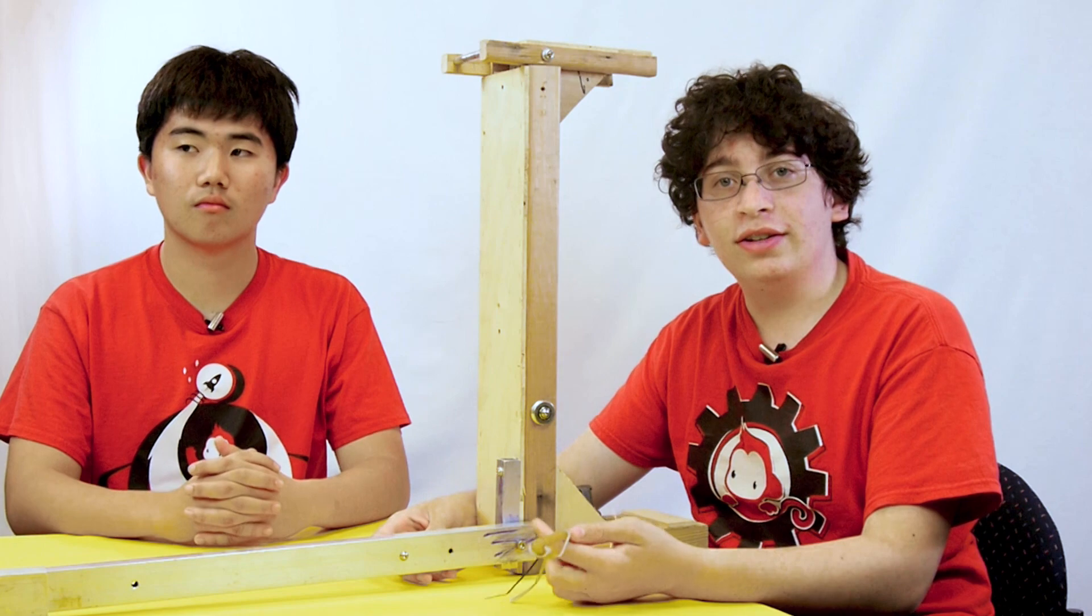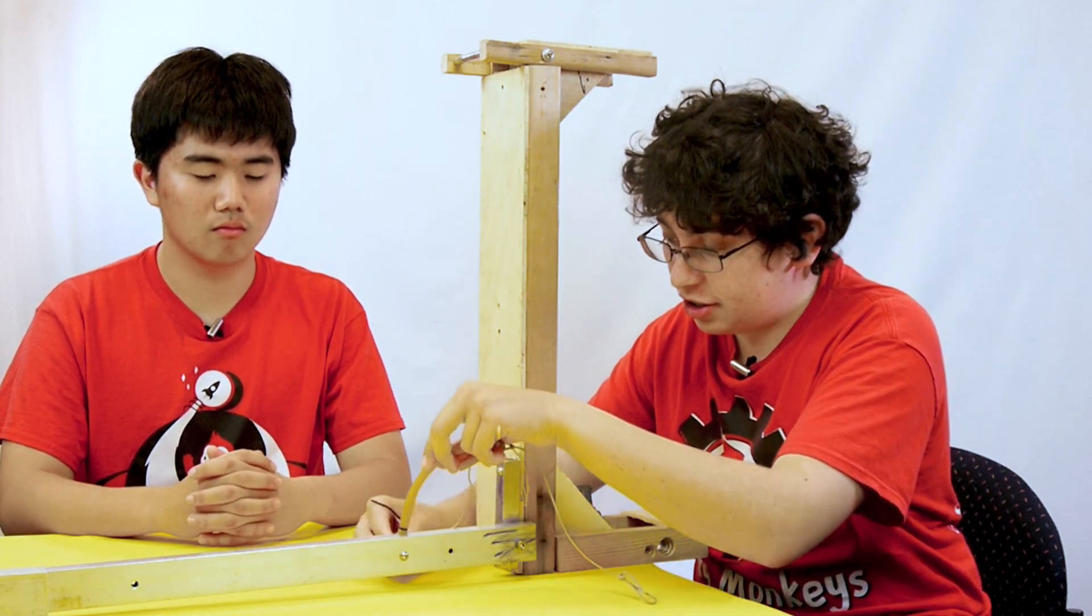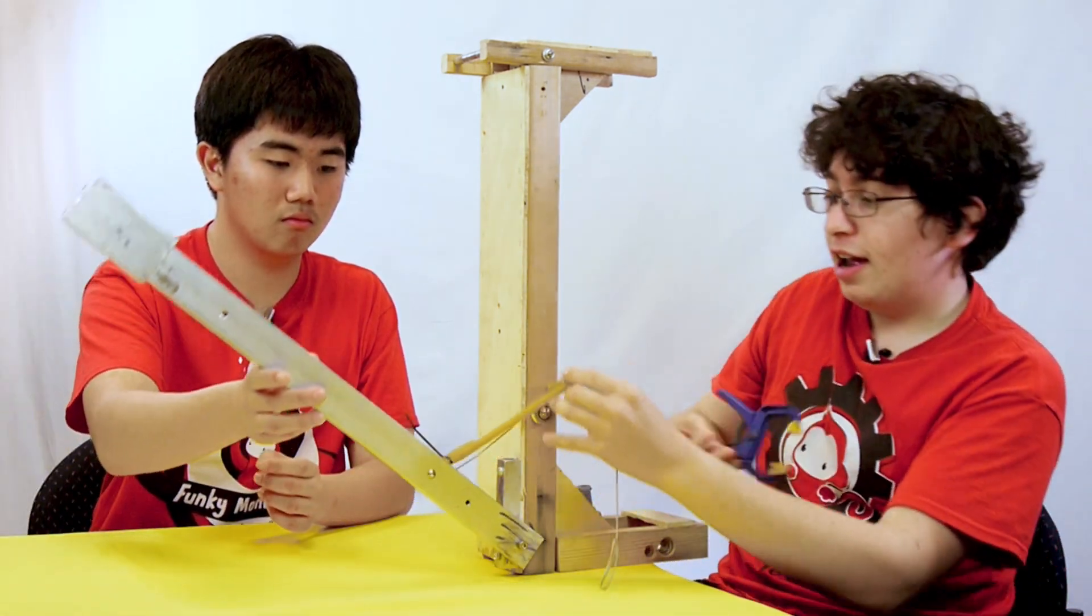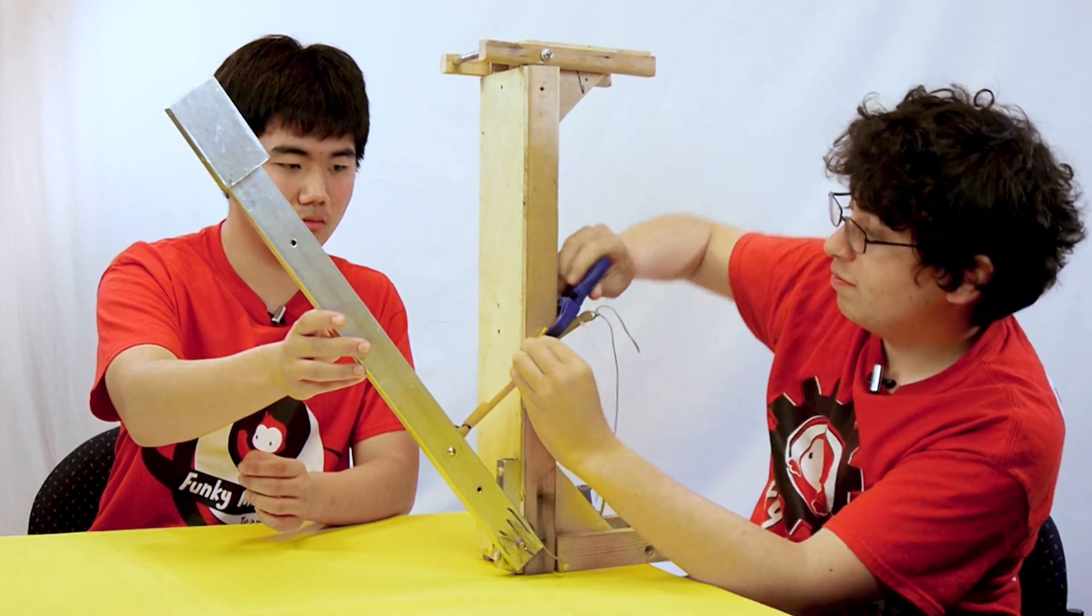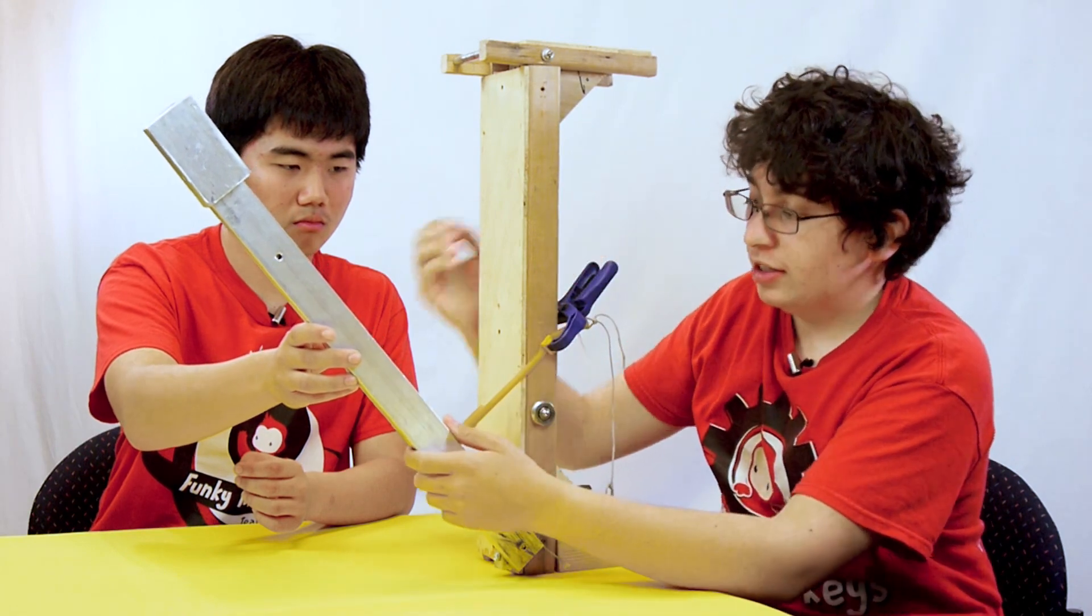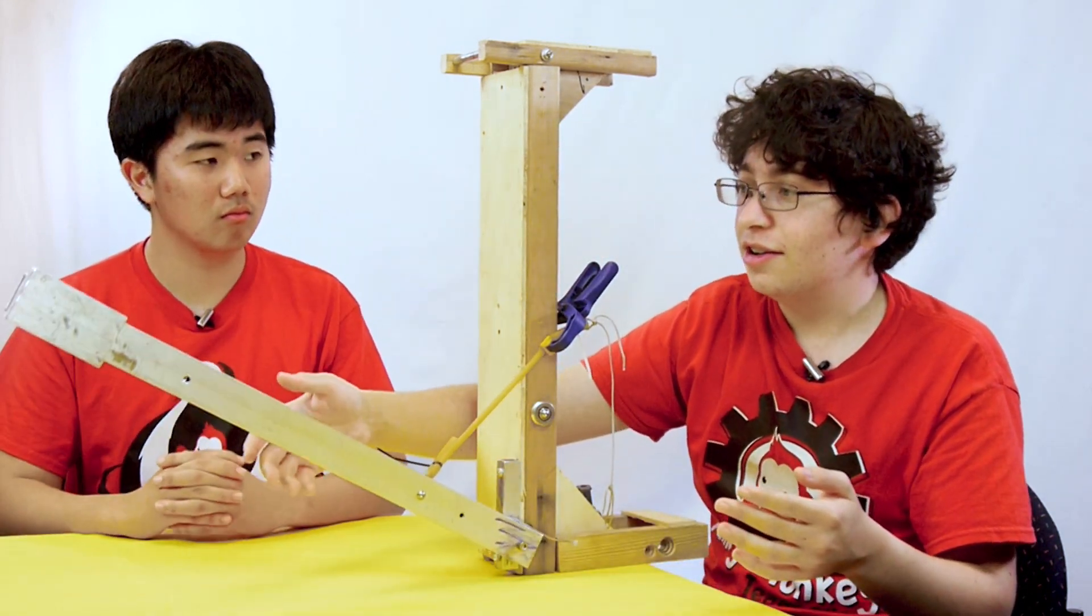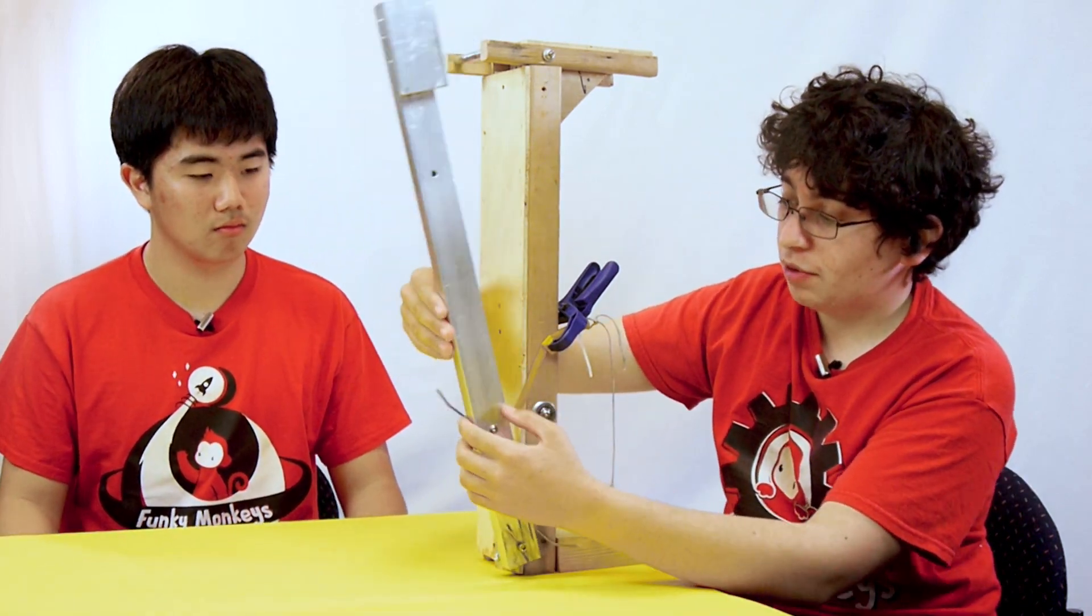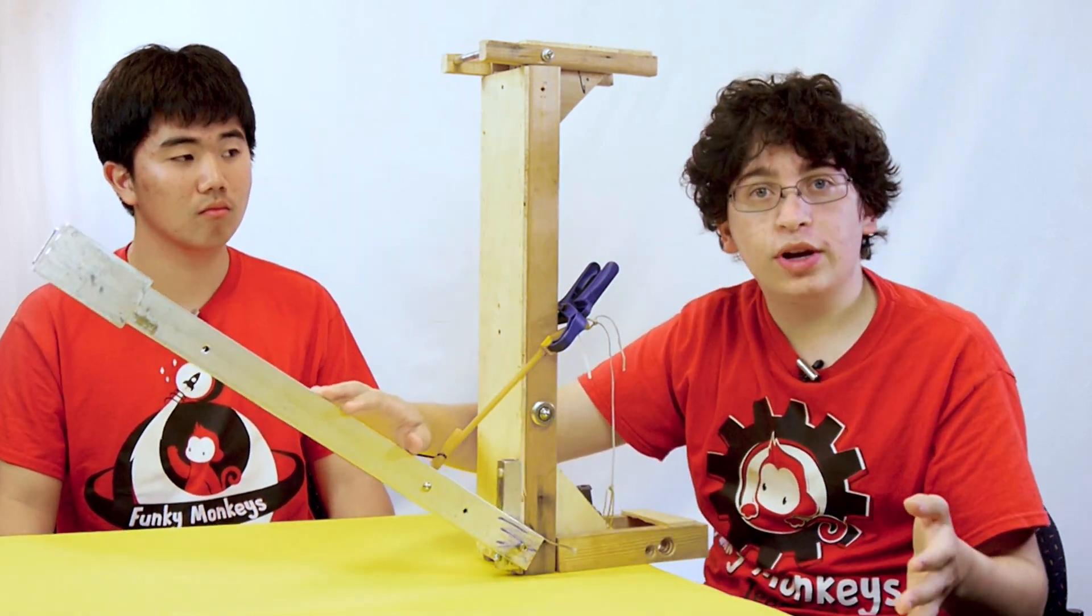So one method of counterbalancing is to take a spring, this is just some surgical tubing, attach it to the arm at some point, and then attach it to a vertical support at some other point. This is definitely not perfect counterbalancing, as when the arm is down it bounces back up, and if you push the arm up to the top, the spring has no tension in it, it's completely loose. So it only really balances at one point.